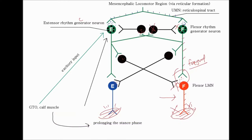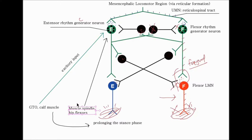You can link the excitatory input from the GTO to the prolonging of the stance phase. The other input is from the muscle spindle, specifically from the hip flexors. The effect of activating the muscle spindle in the hip flexor is an inhibitory input to the extensor rhythm generator — the opposite of the Golgi tendon organ.